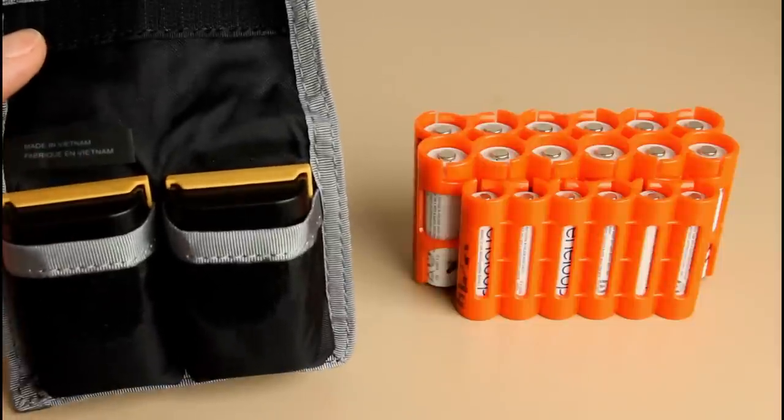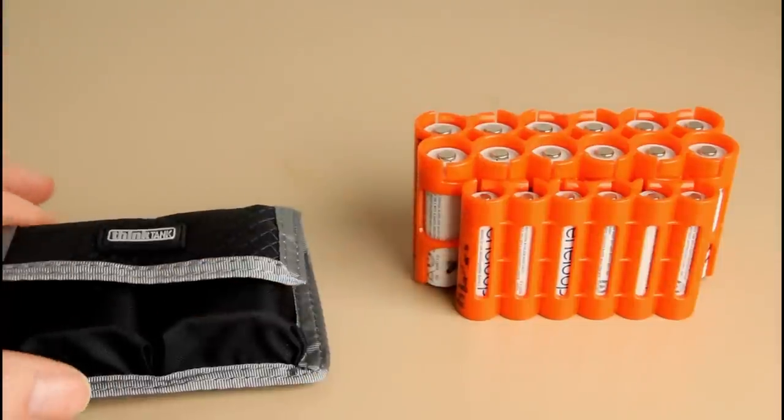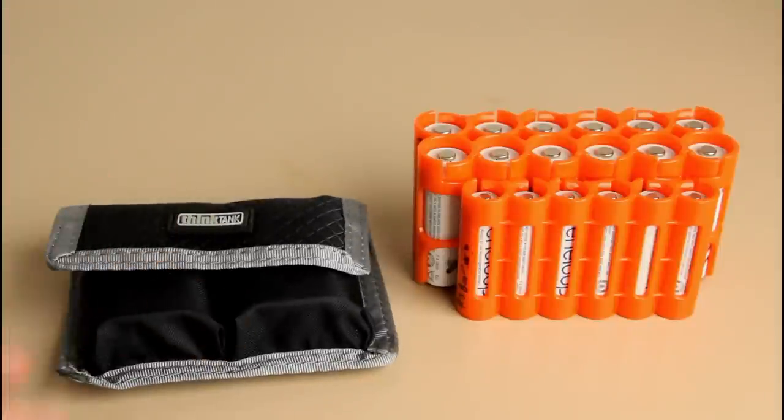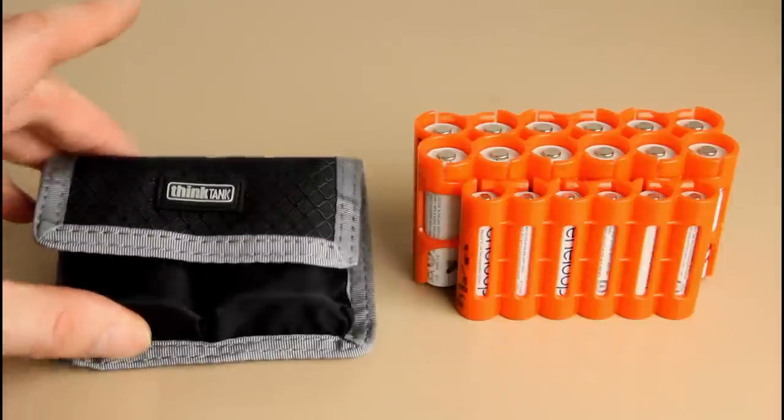I keep these yellow covers on them generally and it's Think Tank so it's really well made. And it just stops the batteries rattling around, stops those yellow caps from coming off and then you've got contacts on the batteries which are there potentially going to touch something. So I prefer keeping them in something like that.